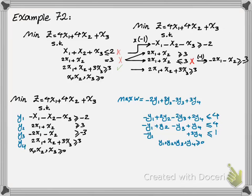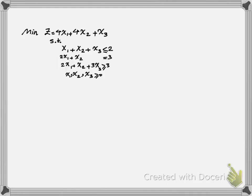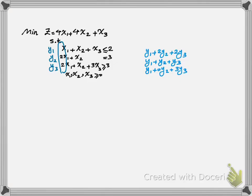However, if you choose the second method — directly writing your dual from your primal without the normalization step — we can also explore that. This is the same primal problem we saw earlier. To do that, I write the constraint equations the same way as before. I define variables for each constraint; this time we only have three decision variables because we only have three constraints. The first equation comes from here: y1 plus 2y2 plus 2y3. The second equation: y1 plus y2 plus y3. The third: y1 plus 0y2 plus 3y3.